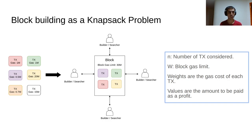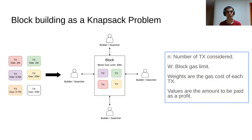In terms of the blockchain, we can consider the transactions as objects. We have a set of transactions ready to be included in a block. Each transaction has a gas, which in terms of the knapsack problem is the weight of each object. Also, each transaction has a profit — the amount to be paid if the transaction is included in the block. The block itself is considered as the knapsack, and it has a block gas limit, so the total gas of the included transactions will not surpass that limit. The idea is that a set of nodes and builders will engage in a protocol to choose the correct subset of transactions to be included in the block.